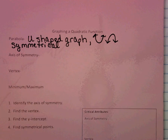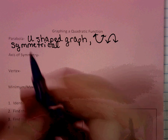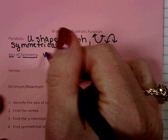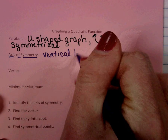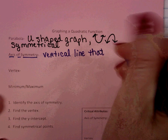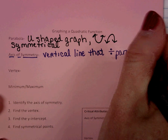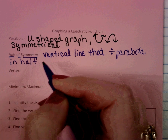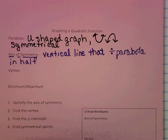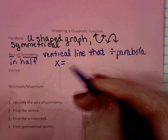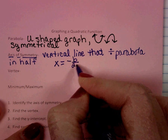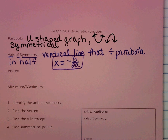Knowing that the parabola is symmetrical is a really useful tool. Because it's symmetrical, we have something called the axis of symmetry — another very important vocabulary term. The axis of symmetry is a vertical line that divides the parabola in half. Because it is a vertical line, we know its equation is an x-equals line, and the formula is x equals negative b over 2a. This is a really important formula that we need to know.